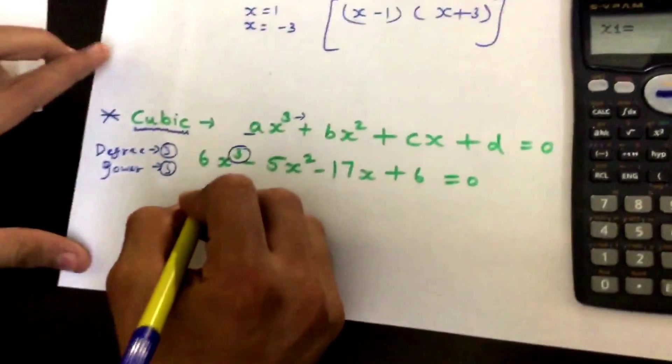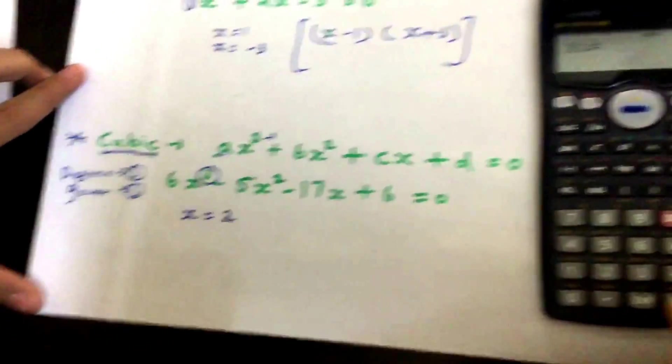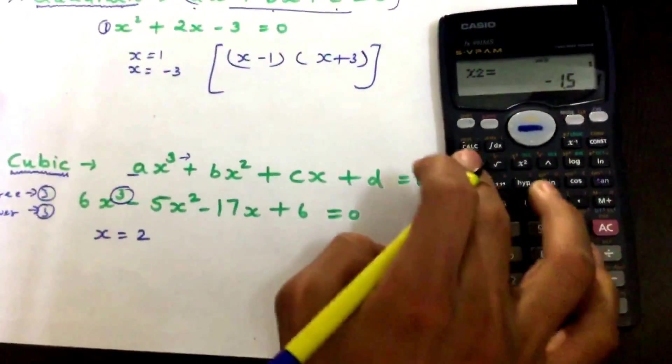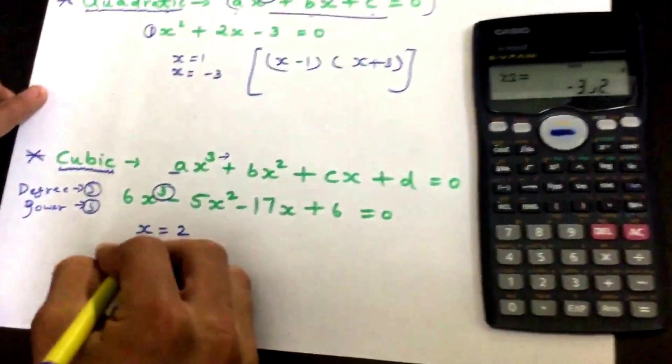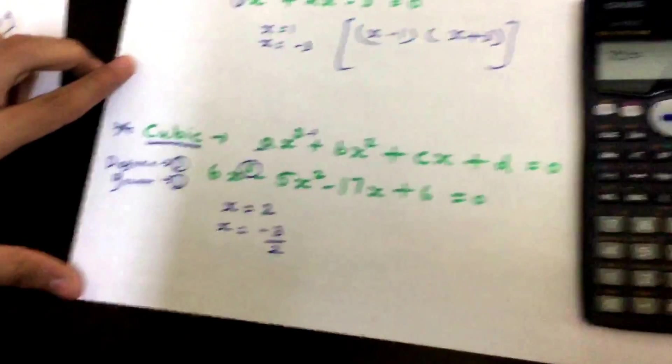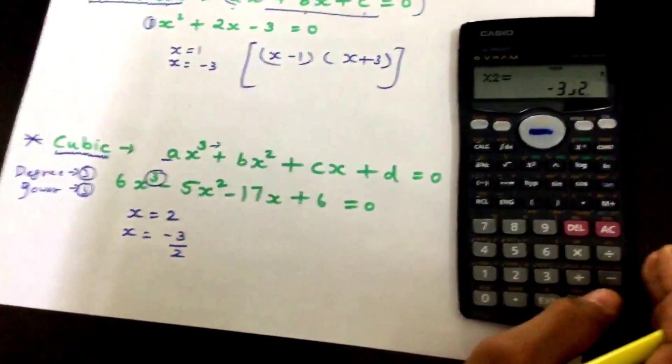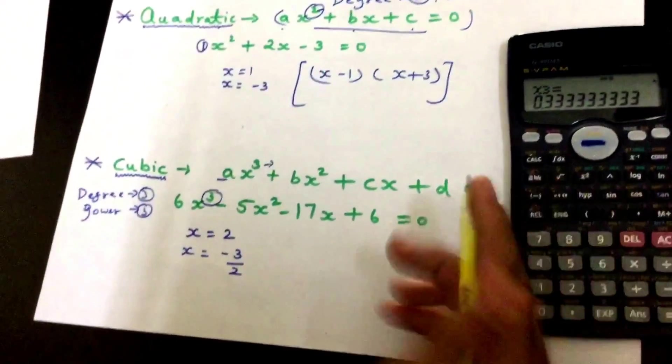It will take a few seconds and will give you the answers. x equals 2. It can also be written like... x equals minus 3/2. And now I can write it also...